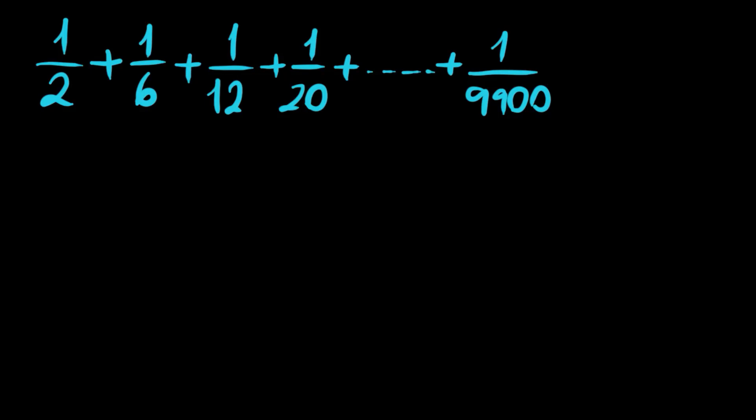Hi everyone, welcome to the channel. Today we have this sum of fractions: 1 over 2 plus 1 over 6 plus 1 over 12 plus 1 over 20 plus and so on plus 1 over 9,900. This sum of fractions actually cannot be dealt with by making the denominators the same — there are so many denominators.